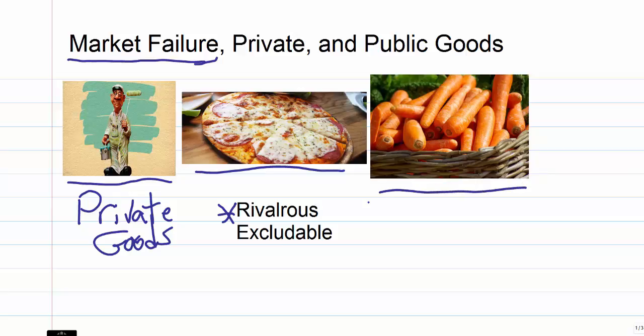Same thing with carrots, or electricity, or houses. If we all try to share the same amount of electricity, we all have to get less. So that's the idea of rivalrous. The opposite, if there was something that we didn't need more of, we'd call it non-rivalrous.